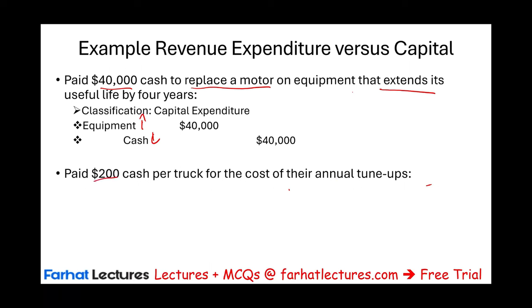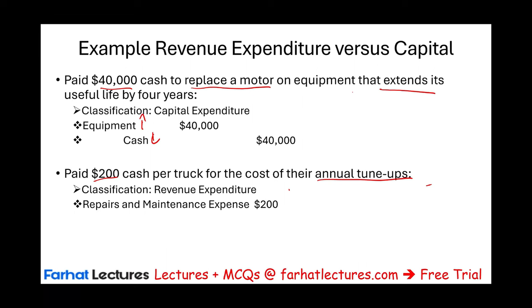Now let's say we paid $200 cash per truck for the cost of their annual tune-up. This would be a revenue expenditure — an expense. We debit repairs and maintenance expense and credit cash. Remember, this is an annual tune-up, so we do this on a regular basis. It does not extend the useful life of the asset; it maintains its current operating condition.